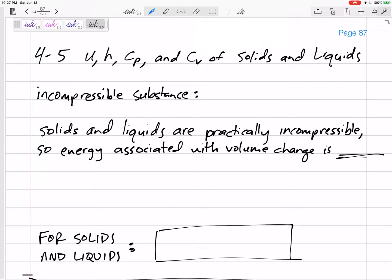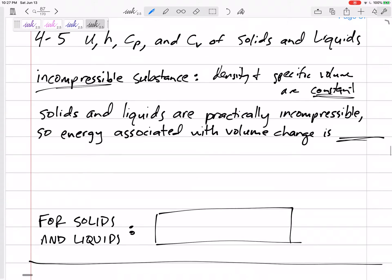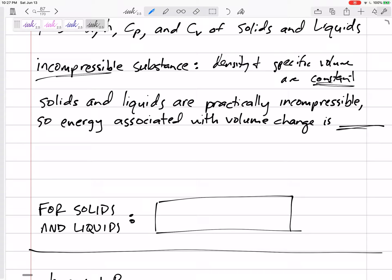Okay, so we've talked about the specific heats of ideal gases. Now let's talk about all of this for solids and liquids. Solids and liquids are nearly incompressible. The density and the specific volume are essentially constant. If they are incompressible, then they are constant. If they're practically incompressible, then they're practically constant, so that any volume change is negligible.